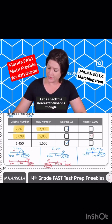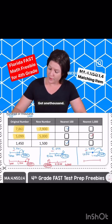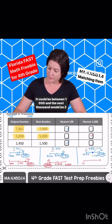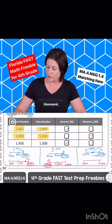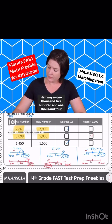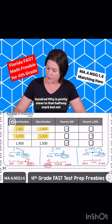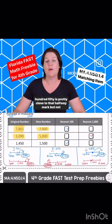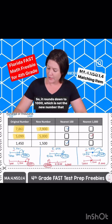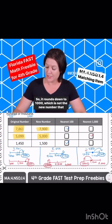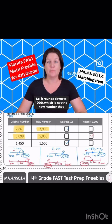Let's check the nearest thousands though. We've got 1000 — it could be between 1000 and 2000. Halfway is 1500, and 1450 is pretty close to the halfway mark, but not quite. So it rounds down to 1000, which is not the new number that was given.